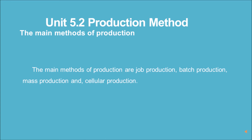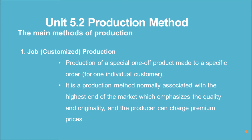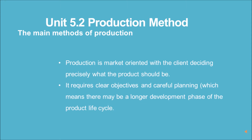The main methods of production are job production, batch production, mass production, and cellular production. Job production is the production of a special one-off product made to a specific order for one individual customer. It is a production method normally associated with the highest end of the market, which emphasizes quality and originality, and the producer can charge premium prices.